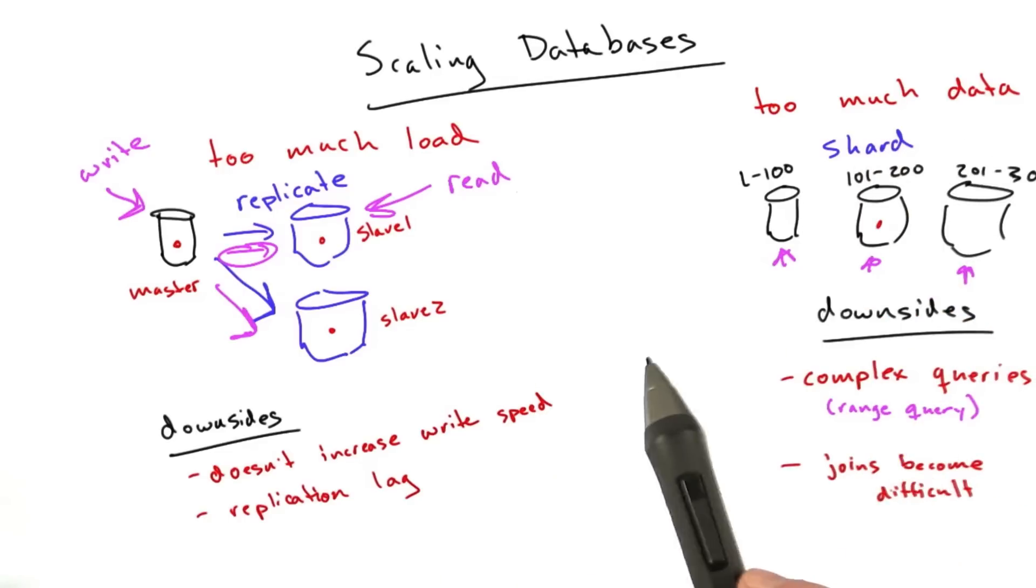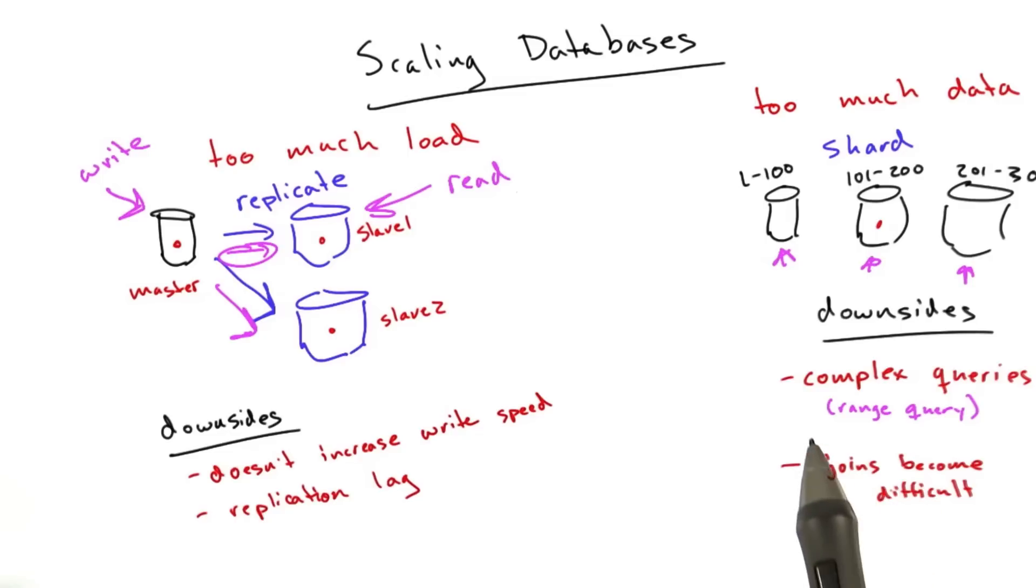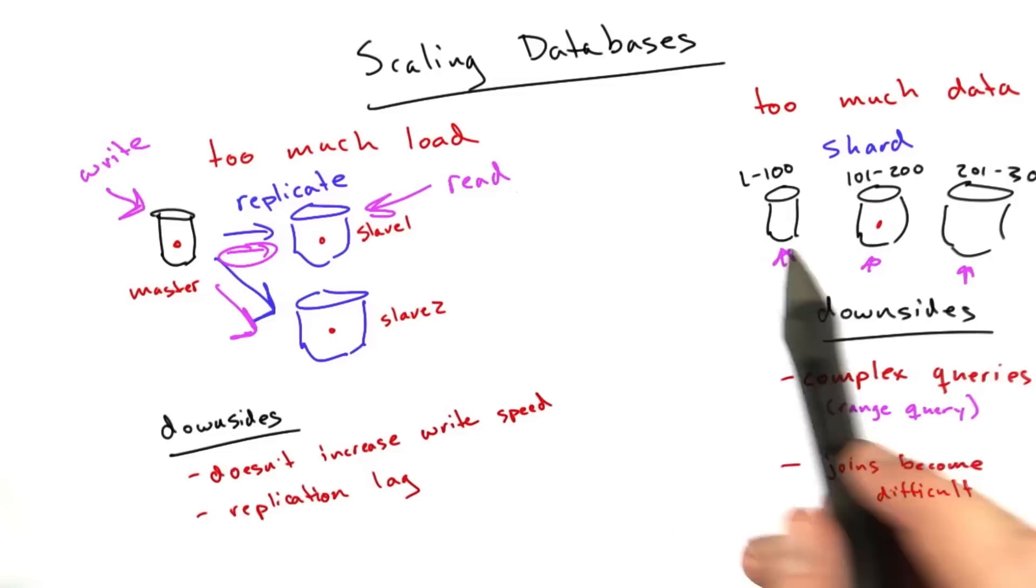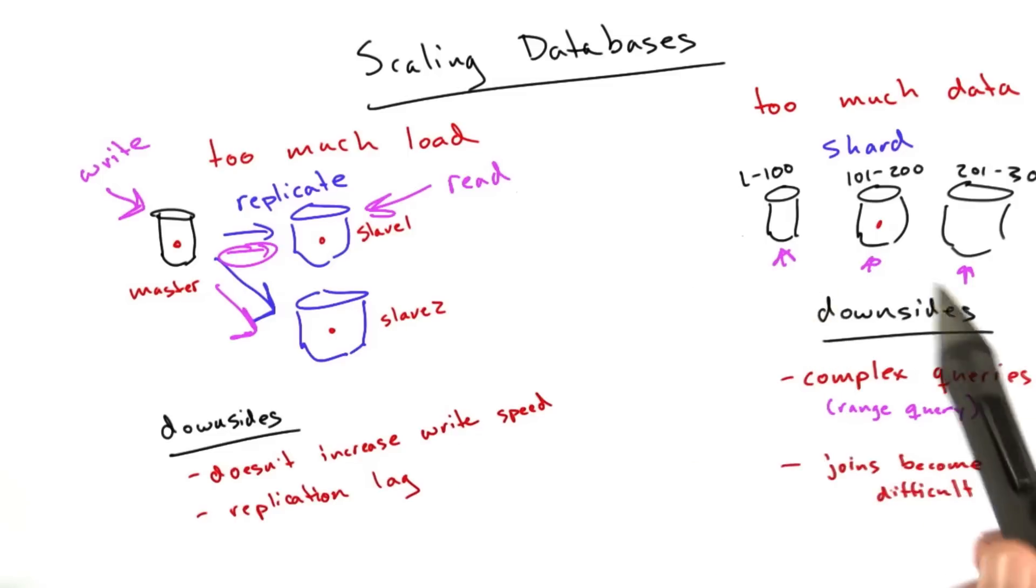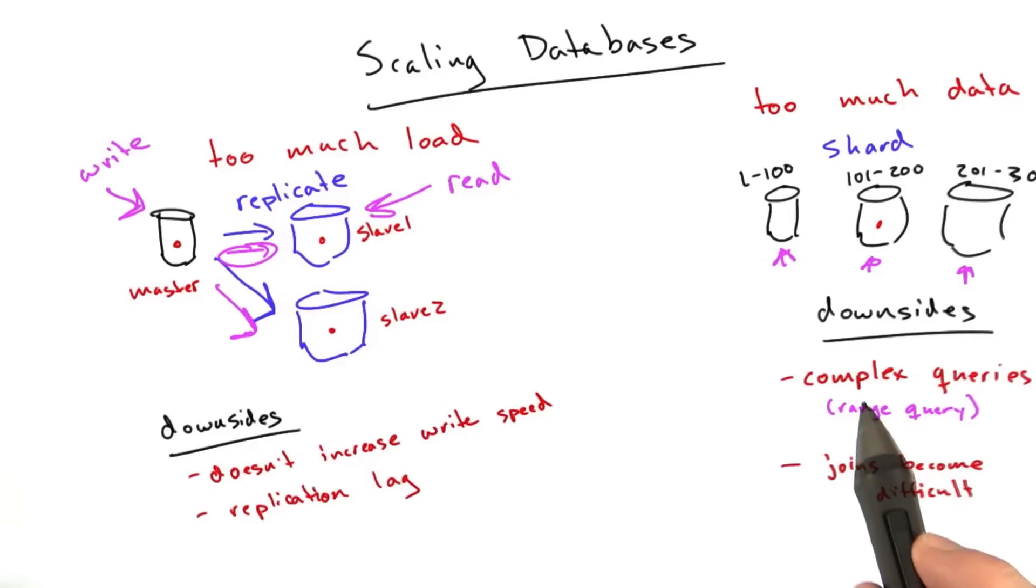Now, there's a lot of research going on of building systems that can overcome these downsides, but if you take the naive approach to replicating and sharding, these are some of the things you'll have to deal with. Generally the benefits outweigh the downsides, because if you design your data in such a way that you don't need to do joins or you don't need to do complex queries, you're in very good shape with both of these.